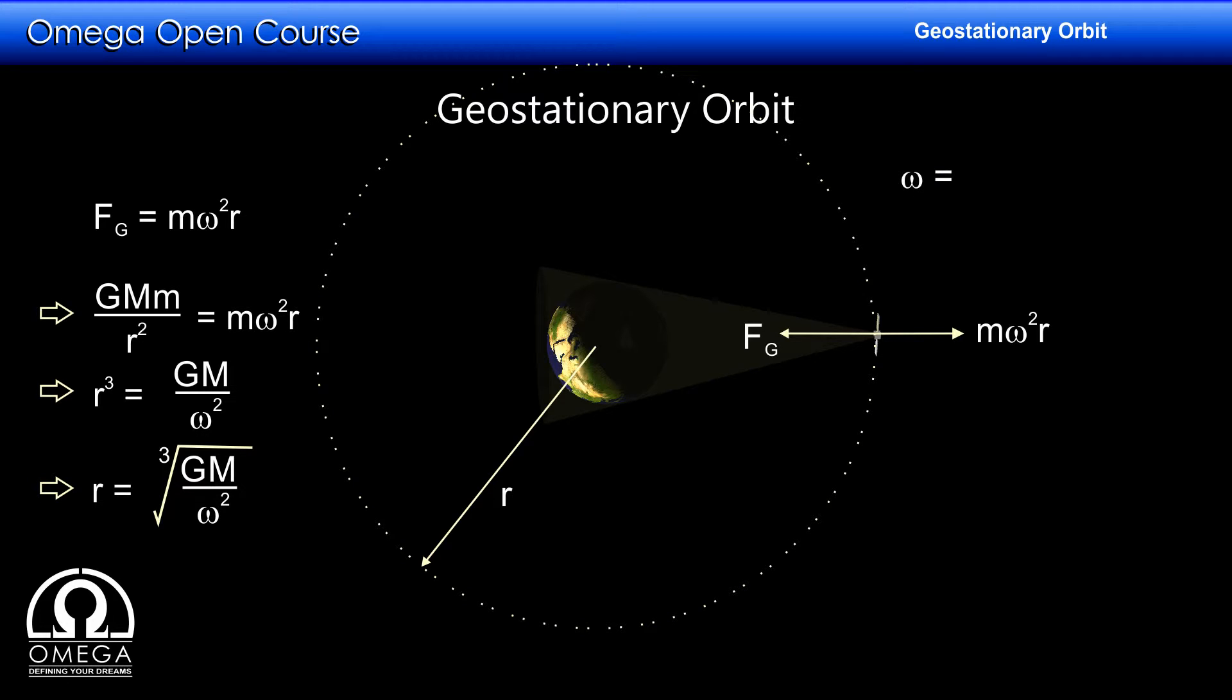Since the orbital period of the orbit is the same as the rotational period of the Earth around its axis, the omega for the satellite must be the same as the angular speed of the Earth around its own axis. Since the Earth takes about 24 hours to complete one rotation, omega equals 2 pi divided by 24 times 60 times 60 radians per second.